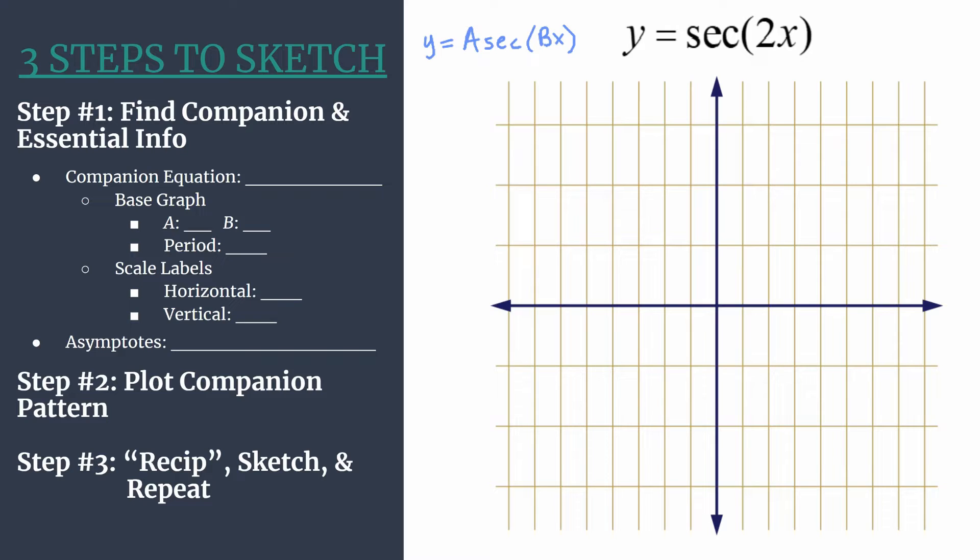The companion equation is simply the reciprocal equation, everything else is the same. We know the reciprocal of secant is cosine. So our companion equation will be y equals cosine of 2x.